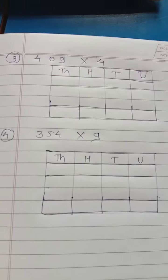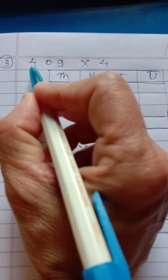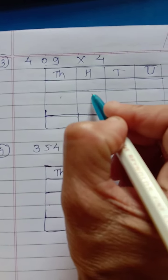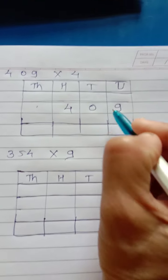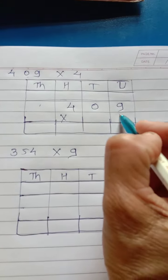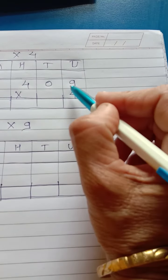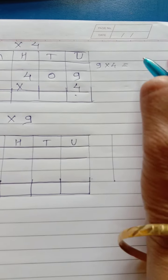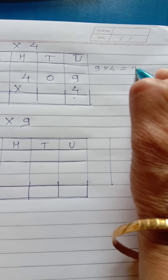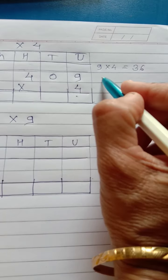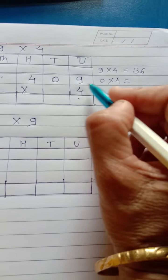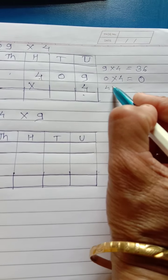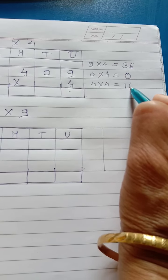Again, this one. This one is 409 multiply by 4. 4, 10 and 9 multiply by 4. Here again you can write like this. 9 multiply by 4. 9 multiplied by 4. 30, 6. 0 multiplied by 4. That is when you are multiplying any number by 0. Your answer will be 0. Then 4 multiplied by 4. 4 fours are 16.